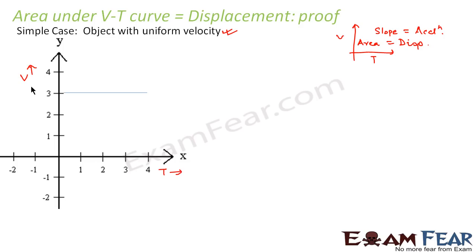Now an object is moving with uniform velocity, that means it will be a straight line parallel to the x-axis. Correct? Yes.